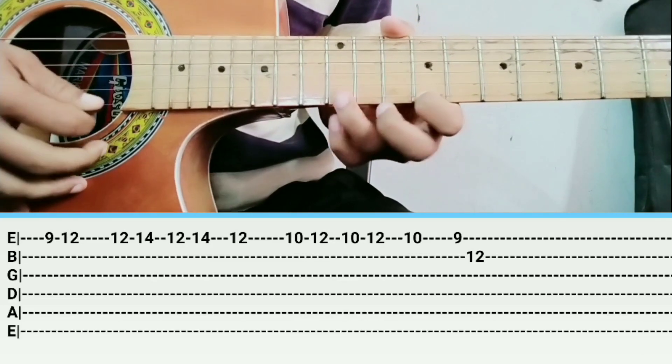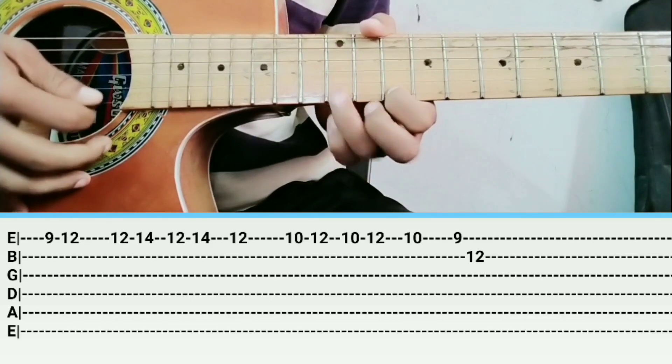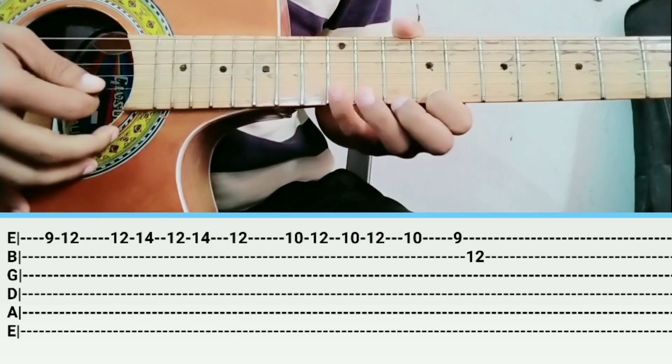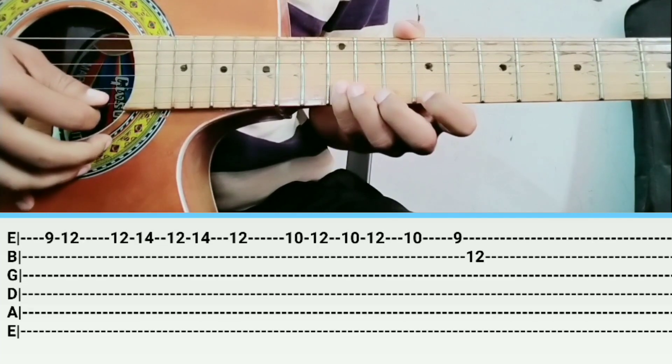So, 9-12-12-14-12-14-12, 10-12-10-12-10-9. 9-12-12 is B string, and the rest are very E string.